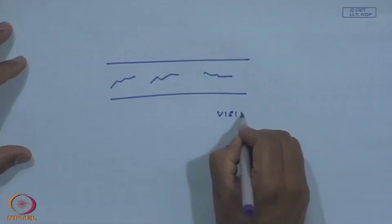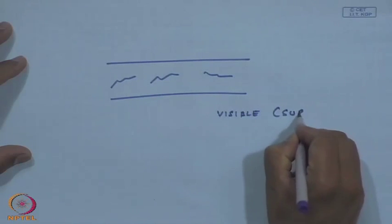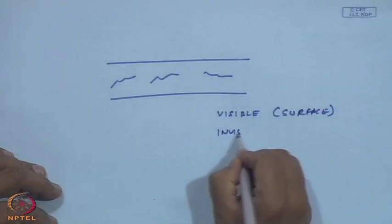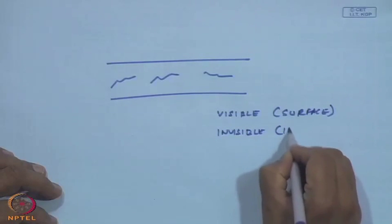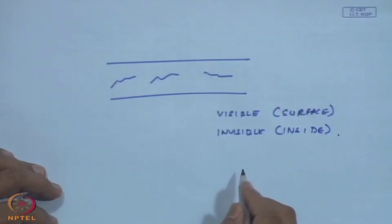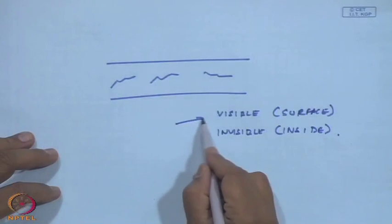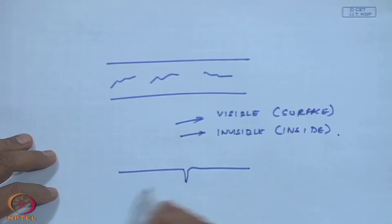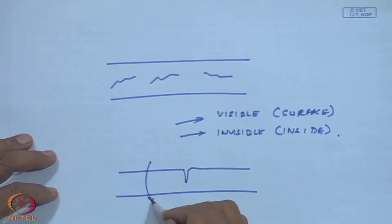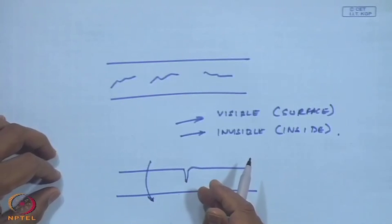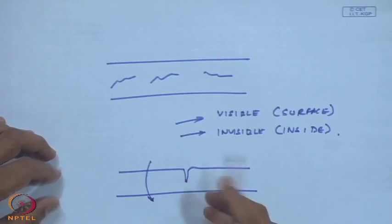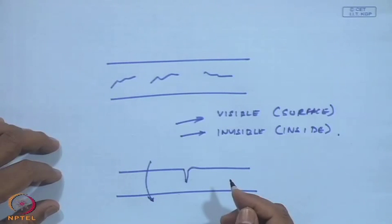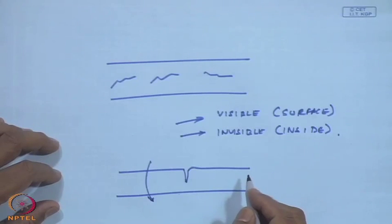Cracks are sometimes visible if they are on the surface, and invisible if they are inside the body. For a rotating shaft, its strength is going to weaken, decrease, and eventually if the crack goes undetected the component is going to fail, leading to catastrophic consequences.